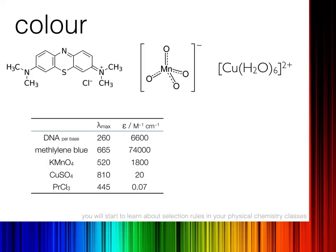To compare extinction coefficients: DNA is a small molecule with not much conjugation and relatively small extinction coefficients. Methylene blue has a much larger amount of conjugation and, more importantly, the structures of the excited and ground states are very similar, giving very high extinction coefficients. For potassium permanganate, copper sulphate — which forms a hexa-aqua copper complex in solution — and praseodymium chloride, the extinction coefficients are lower. Copper has a very low extinction coefficient and praseodymium an extremely low one.